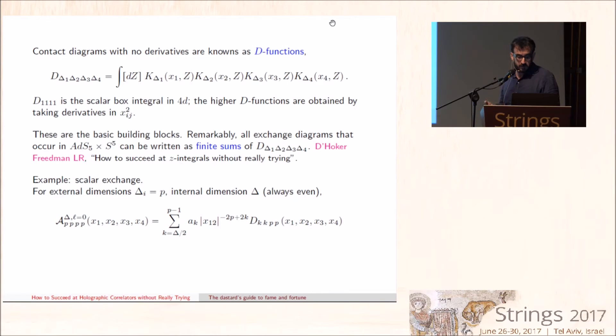This is not true in general. For example, it is definitely not true for AdS4×S7, which is one of the reasons why this has been such a difficult case to treat. Here I'm giving you an example. If you take the four external dimensions to be equal to P and the four internal dimensions to be an even integer δ, which is precisely what happens in AdS5×S5, but it would not be the case in a generic background, then this exchange diagram is a simple finite sum of these D functions.